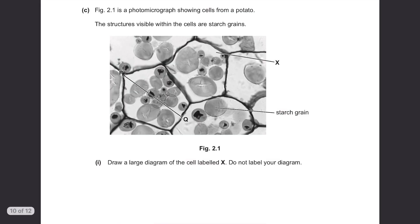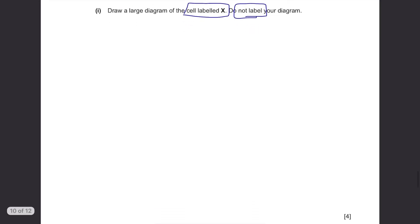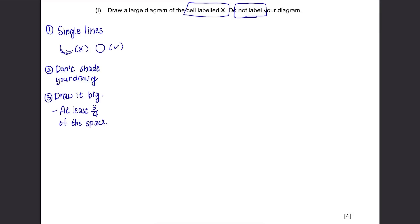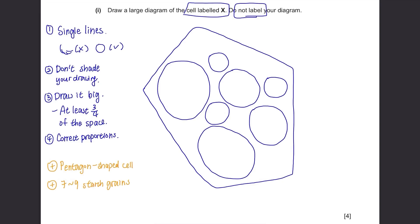Part C(i): Figure 2.1 is a photomicrograph showing cells from a potato. The structures visible within the cells are starch grains. Draw a large diagram of the cell labelled X. Do not label your diagram. You just need to draw cell X, don't draw the whole photo. Also don't label it. I've mentioned how to draw proper diagrams in Biology Paper 6 in my other video on Paper 61 but since it's important let me go through it again. The outline needs to be of single lines. No double or triple lines like this. Draw a clear single line. Also never shade your drawing even if the diagram looks dark.